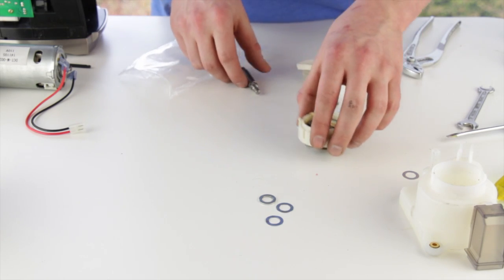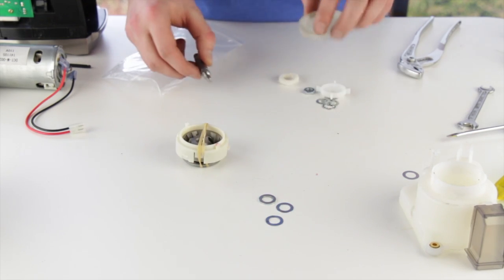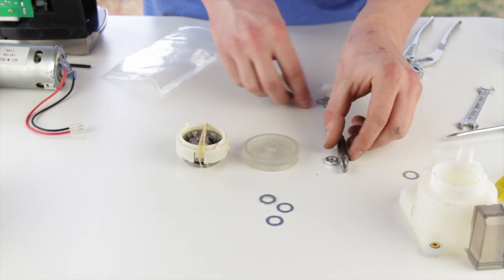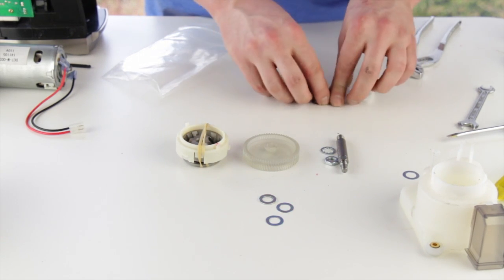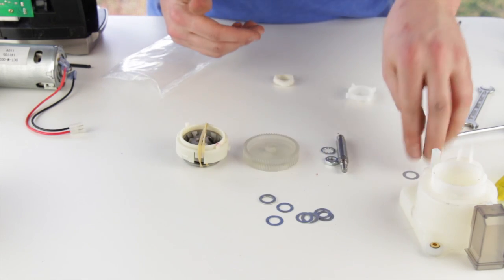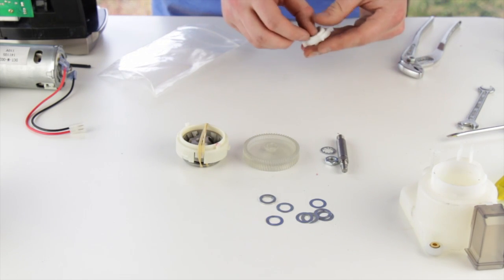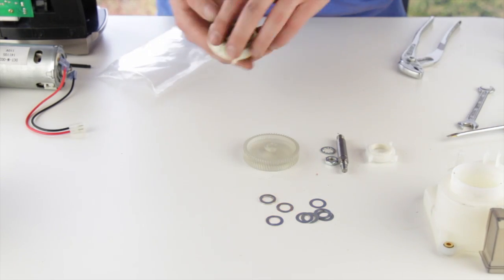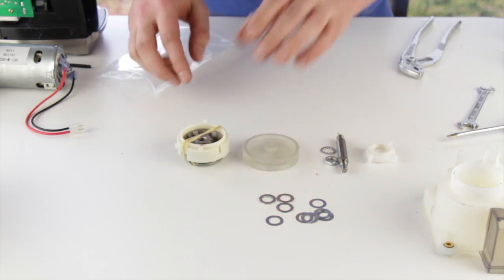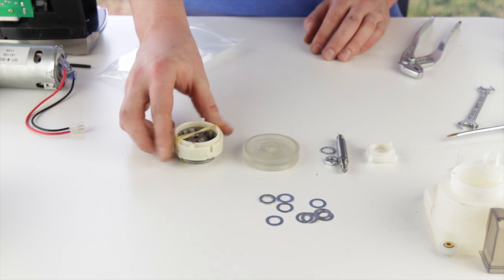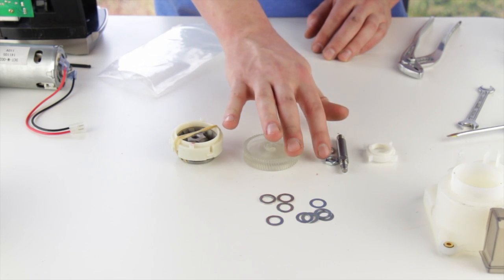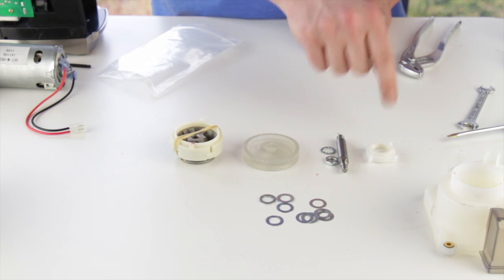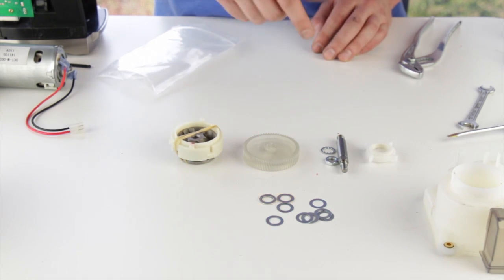At this point your workspace should look something like this. I have a new cone ring burr, drive gear, 13mm nut, lock washer, drive shaft, paddle wheel, and an assortment of shims.